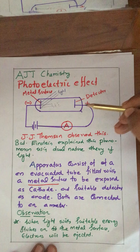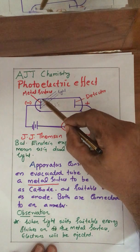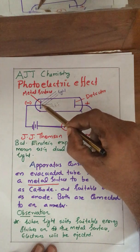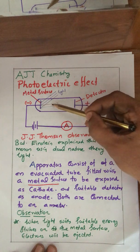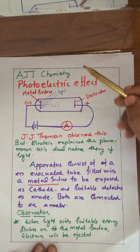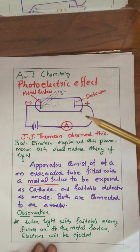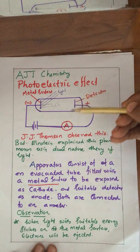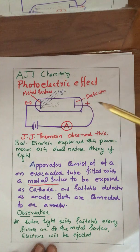Now look at the observations obtained. The first point is that there will be emission of electrons from the surface of certain metals when light with suitable energy or suitable frequency strikes on it. The minimum amount of energy required for this ejection is called threshold energy. Every metal has a definite threshold energy — for example, cesium has threshold energy x, potassium y, rubidium z, and so on. A particular metal has a particular threshold energy.